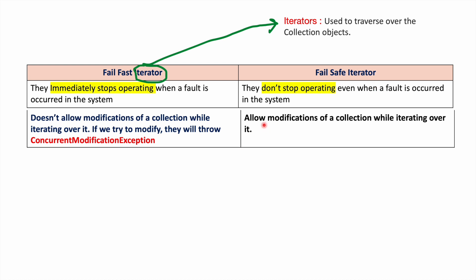FailSafe iterators allow modifications of a collection while iterating over it. That is the reason in the case of ConcurrentHashMap, it is not giving an error. HashMap returns an iterator called a FailFast iterator. ConcurrentHashMap returns an iterator called a FailSafe iterator.